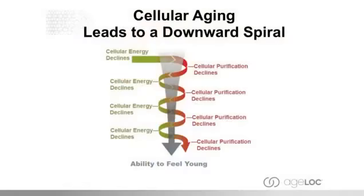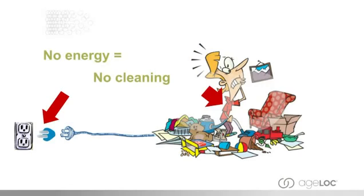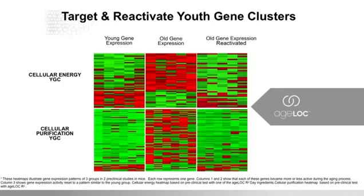These two systems — cellular energy and cellular purification — are very closely related. They are separate machinery within the cell, and the genes that code for that equipment are also separate, but they work together. As cellular energy declines, the ability of the cell to purify itself also declines. And as that happens, it affects cellular energy because things get gummed up in the cell. You get a downward spiral — a one-two punch of aging — that affects your ability to feel young.